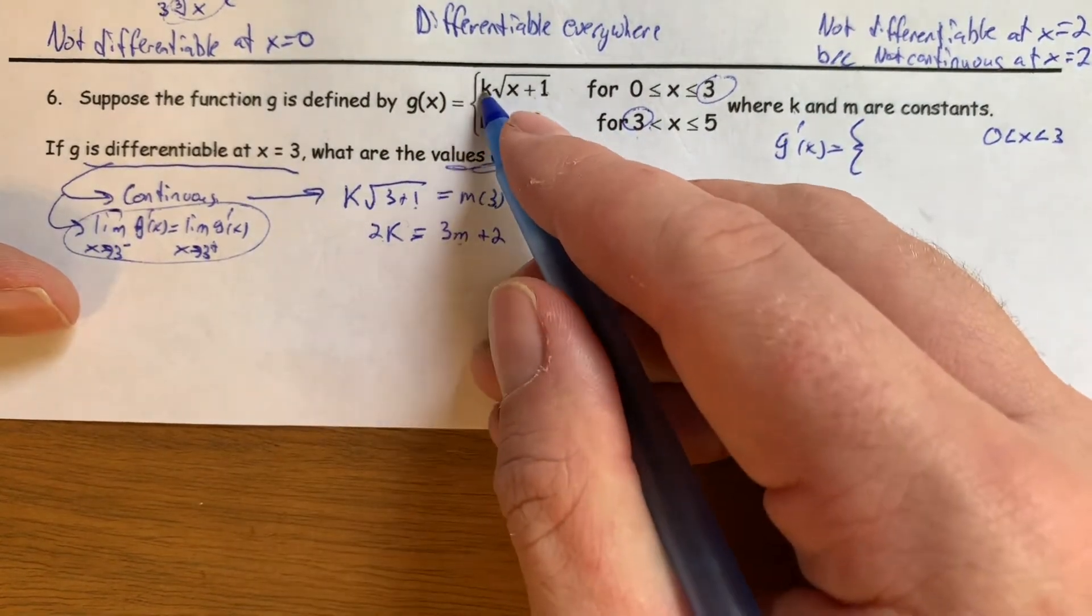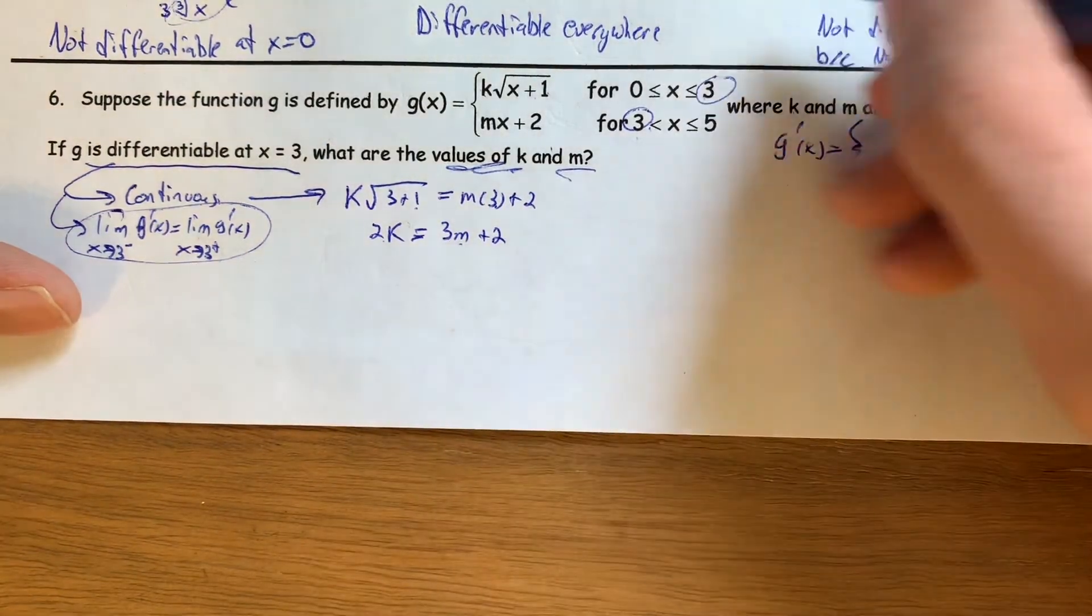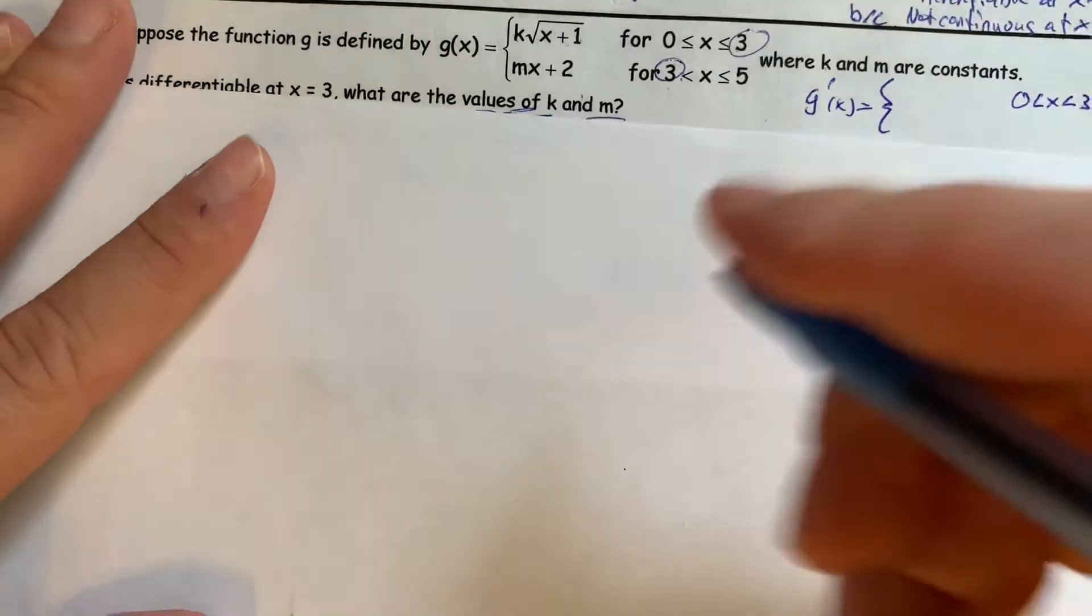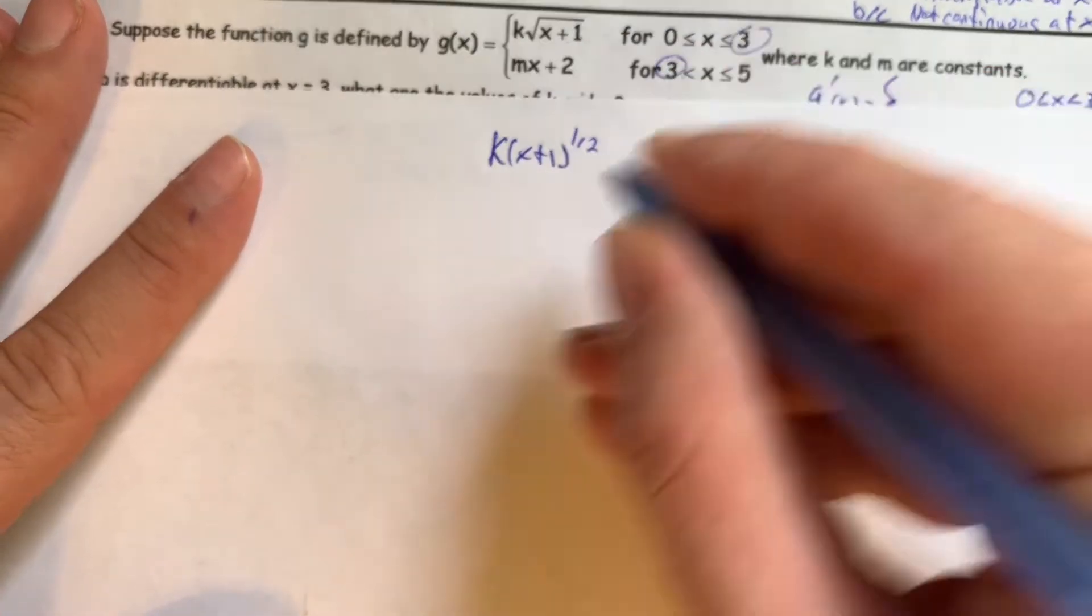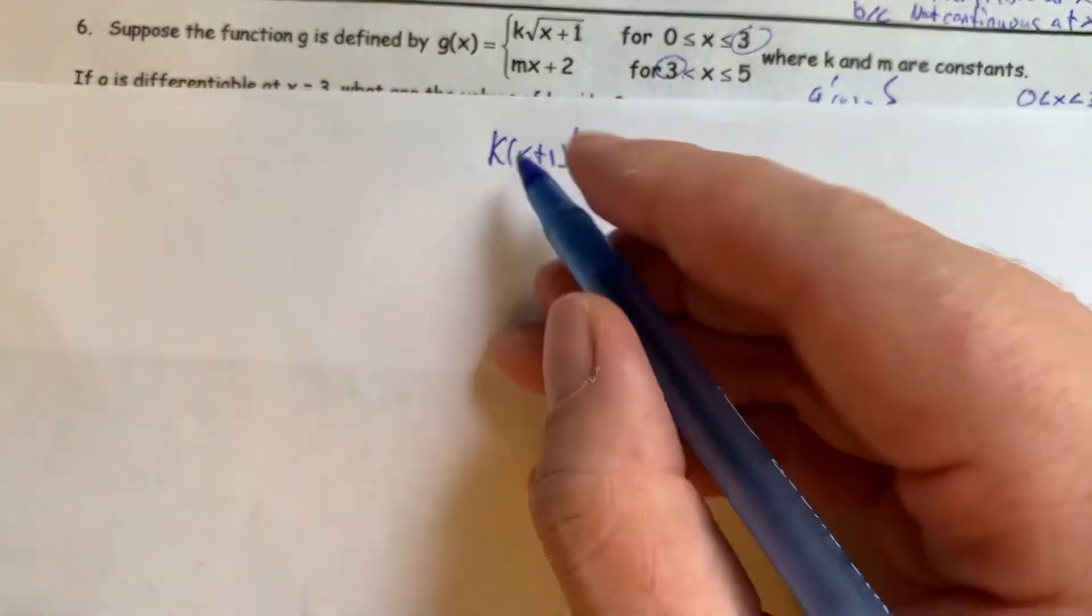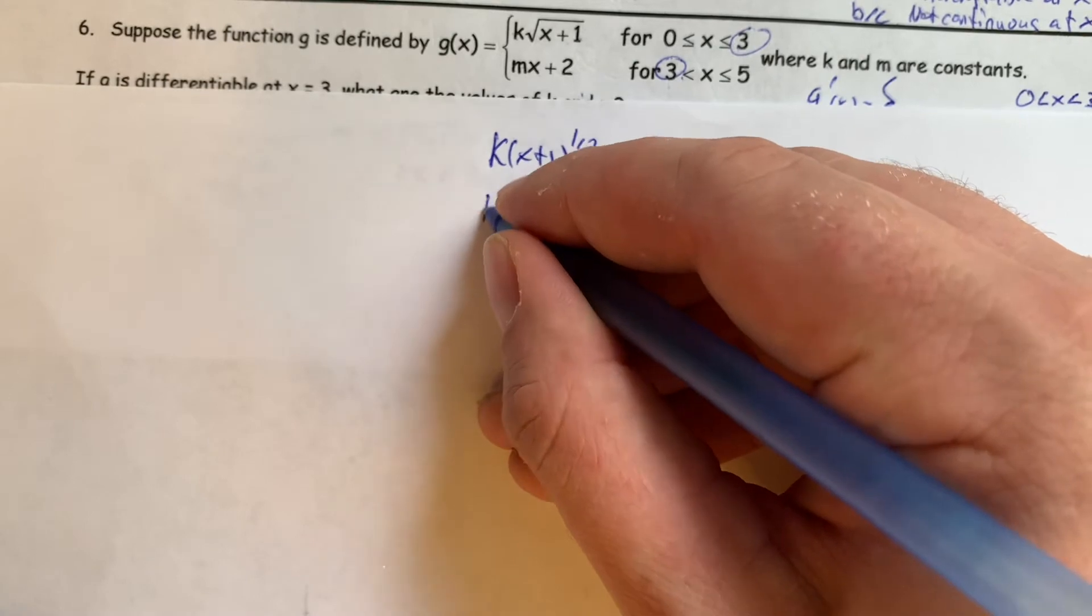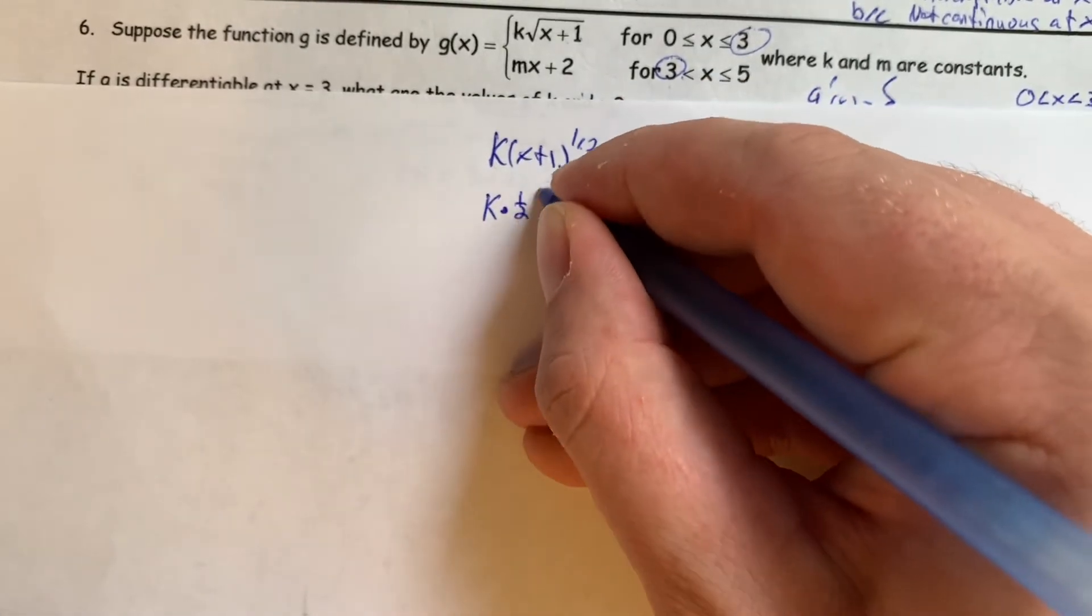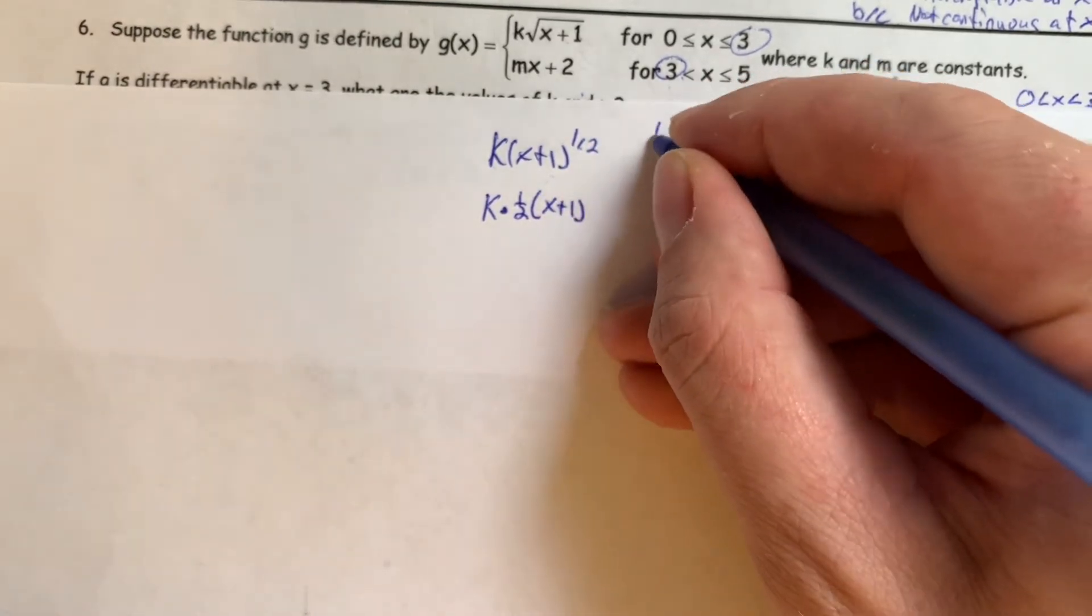So the derivative of, this is a constant, the derivative of k square root of x plus 1. This is, I'm going to do this on another sheet of paper here because I'm running low on room. This is k times x plus 1 to the 1 half power. This is a chain rule thing with a constant multiplier. So the derivative of k times x plus 1 to the 1 half power is k, constant multiplier stays there, times 1 half x plus 1, I have to lower the power by 1.